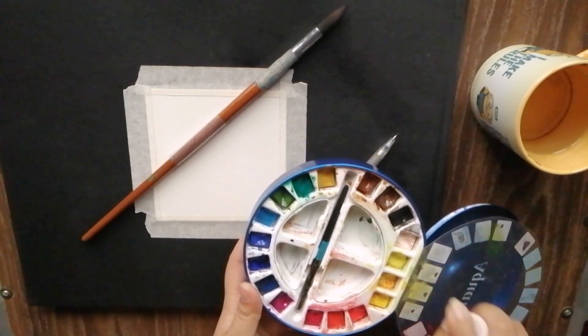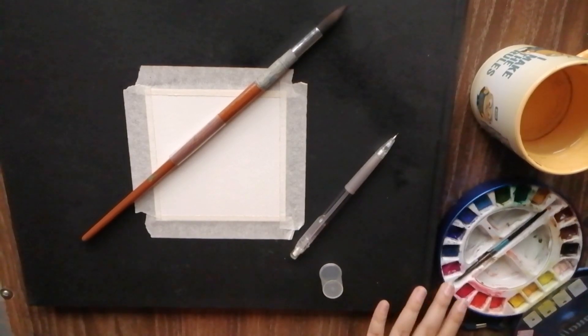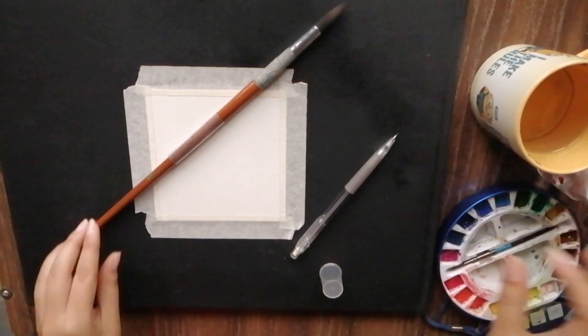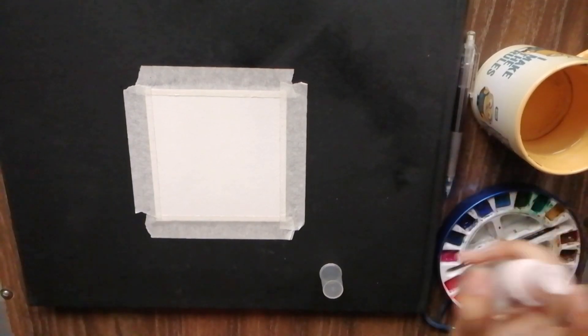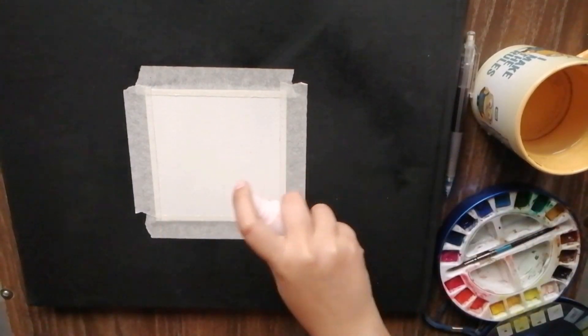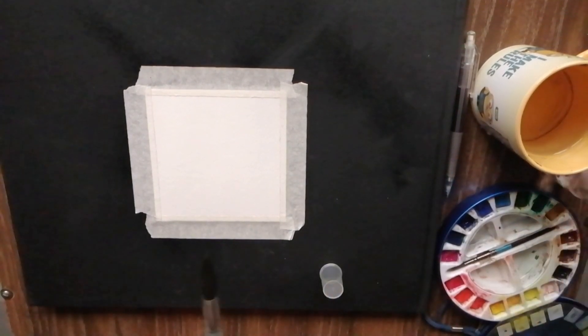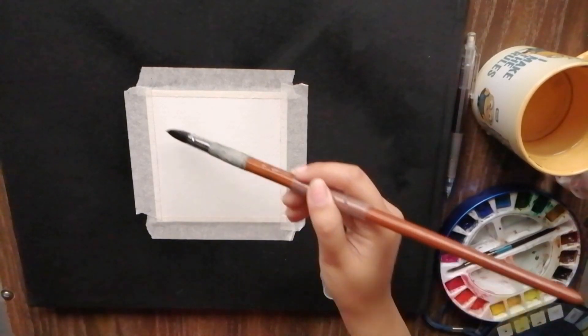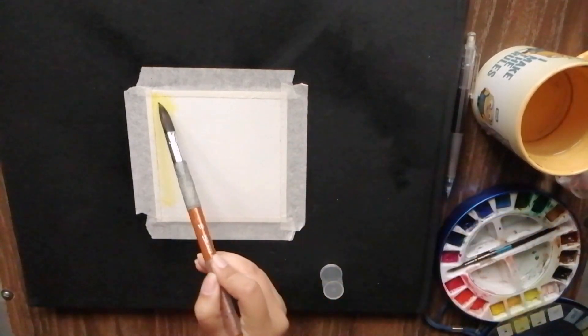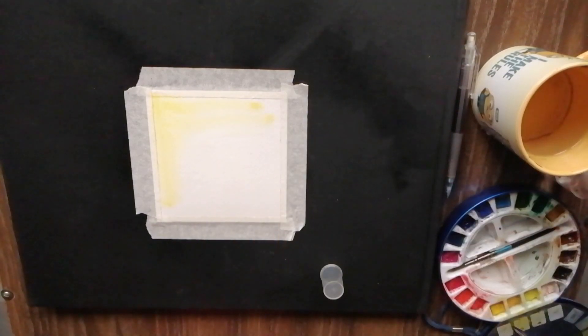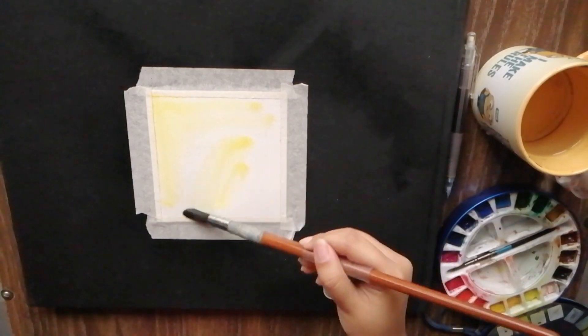We're going to start off by putting down a flat layer of yellow paint on watercolor paper. I'm just using my spray bottle to activate my watercolors and wet the paper. The paint doesn't need to be too saturated or too watery—it's just a flat wash of color.